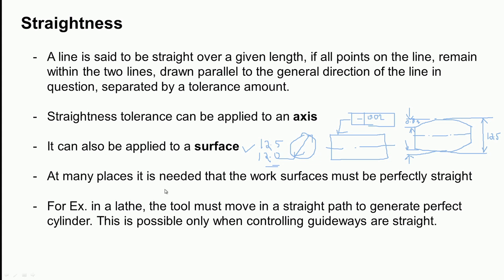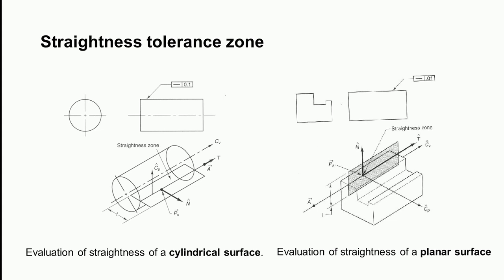At many places, work surfaces must be perfectly straight. For example, in a lathe the tool must move in a straight path to generate a perfect cylinder, which is only possible when the guideways are straight. When the carriage moves along a straight guideway, the cutting tool gives the correct cut on the work piece. If the guideways are not straight, the tool moves incorrectly and we get a lot of errors on the work pieces. Therefore, we need to check whether the machine tool guideway is straight using various instruments and methods.